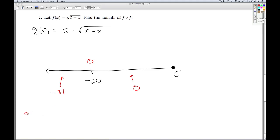So let's check it out. If I plug in g of negative 31, I'd have 5 minus the square root of 5 minus negative 31, which would be 5 minus the square root of 36, which is 5 minus 6, which is negative.